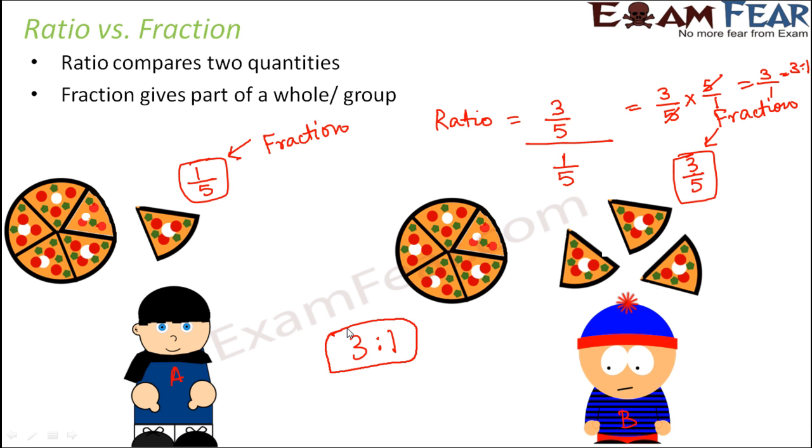Therefore, pizza eaten by B is to A is equal to three is to one. This three is to one is a ratio because it is comparing two different quantities, comparing the amount of pizza eaten by A and B. These are two different quantities altogether which are getting compared.